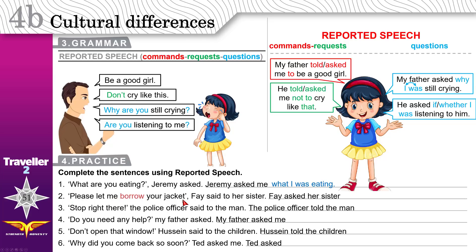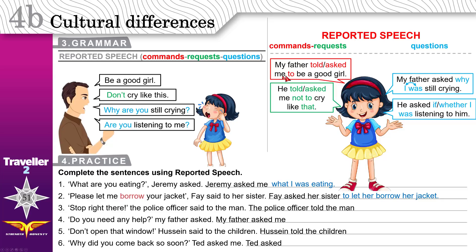Please let me borrow your jacket. When you borrow something, you take something that is not yours, use it for a short period, and then give it back. Faye said to her sister — Faye asked her sister — this is a command, just like 'be a good girl.' Copy the same thing and add 'to.' Faye asked her sister to let her borrow her jacket. You don't make any changes with commands and requests — just copy everything. Add 'to' if it's a command; add 'not to' if it's a request.